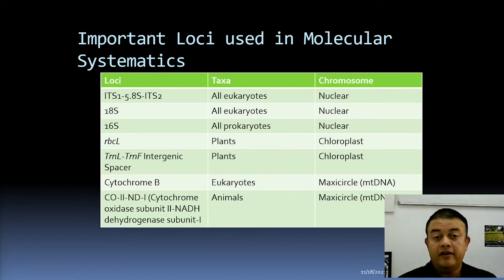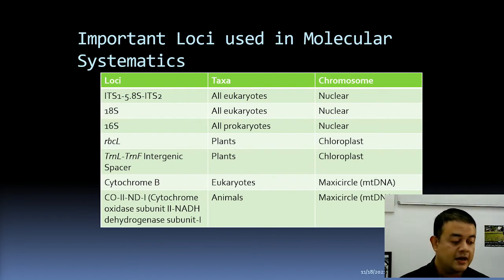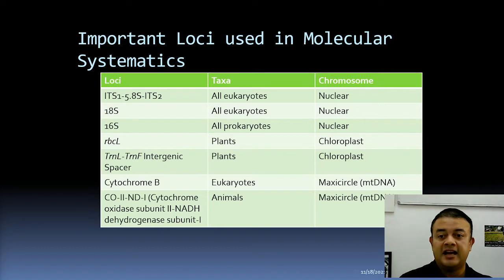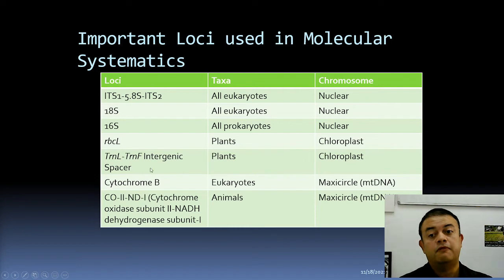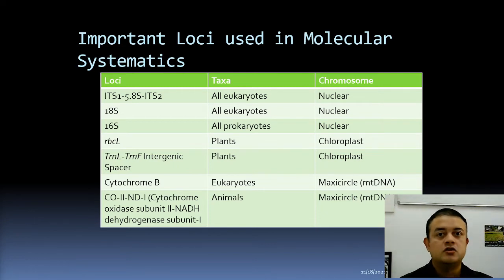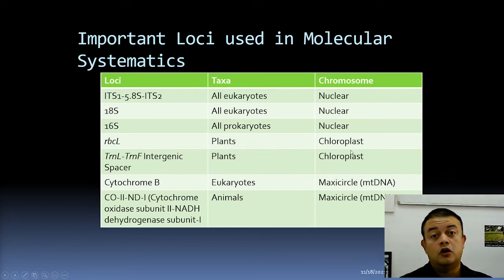Rubisco — ribulose-1,5-bisphosphate carboxylase — is a very important enzyme in photosynthesis. rbcL codes for the large subunit; there is also rbcS for the small subunit, but rbcL is far more phylogenetically informative. It is used specifically for plants and is coded by the chloroplast genome — the circular genome inside the chloroplast organelle, not the nuclear genome.